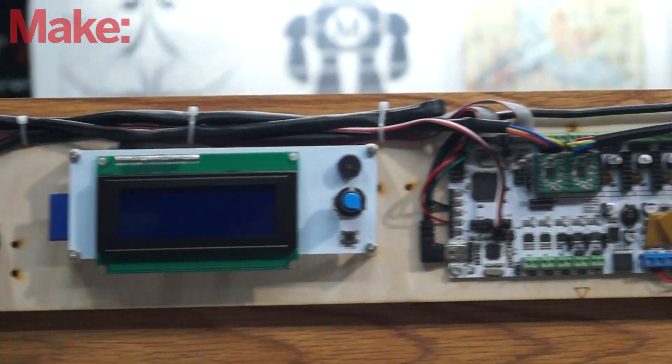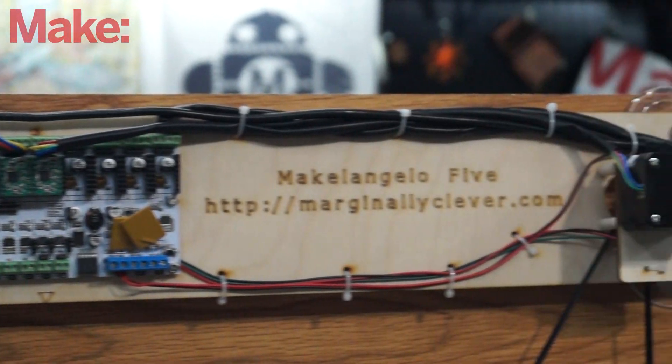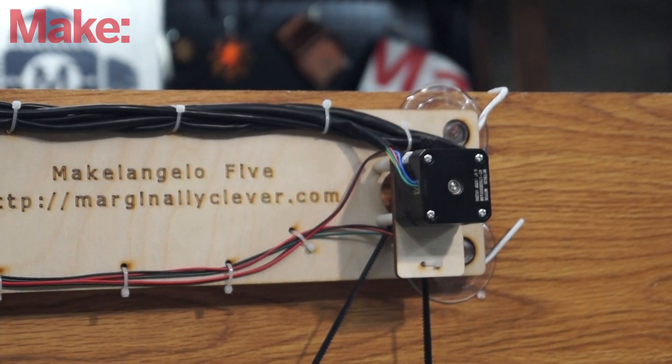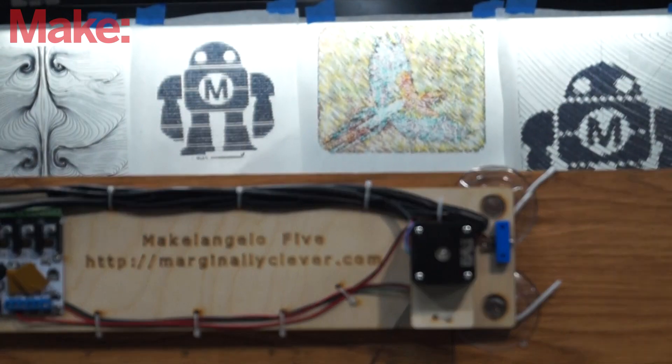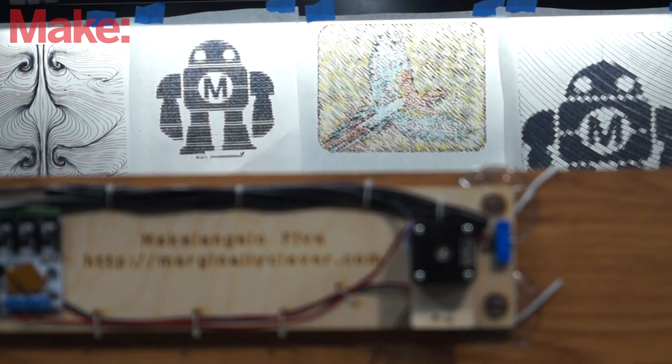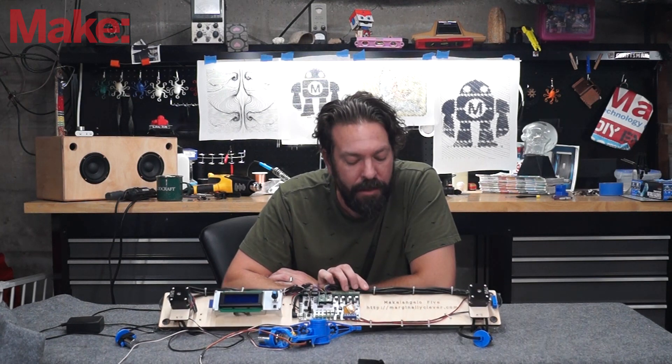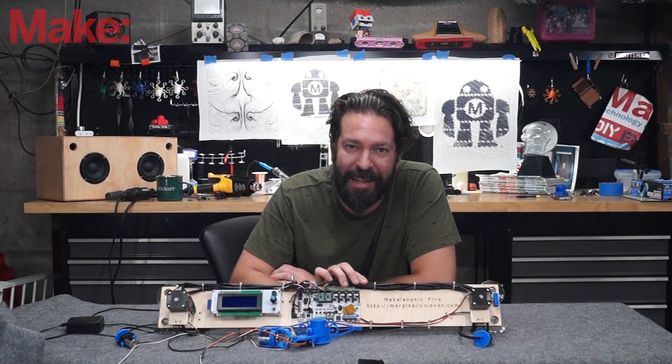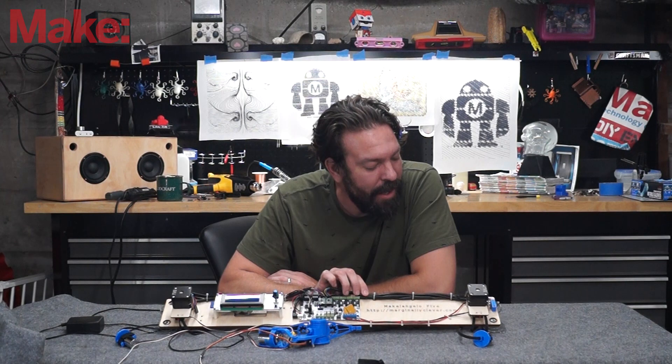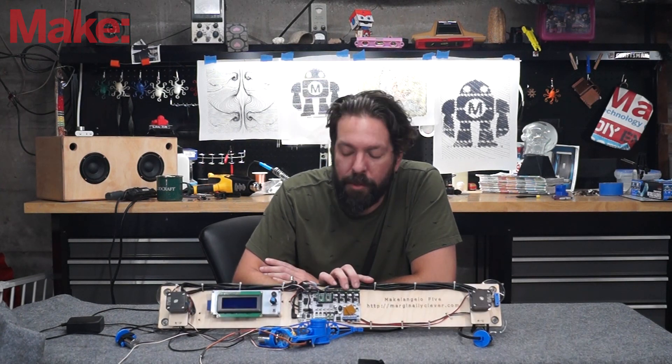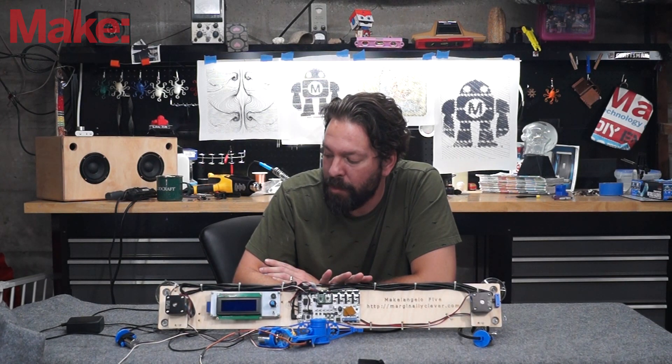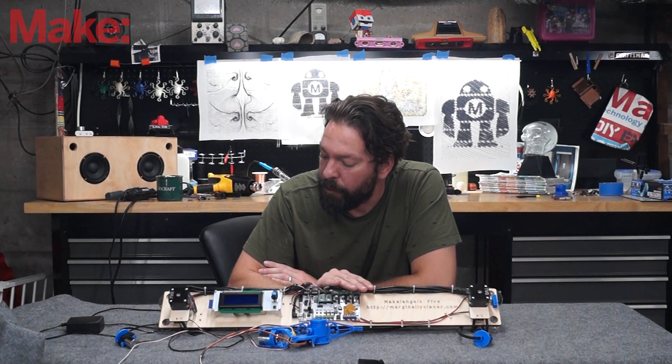This is the Michelangelo 5 from Marginally Clever Robotics. It's just under $400 Canadian for the complete kit. It comes with everything you need to start drawing except paper, although you could just draw directly on the glass with what it comes with. You can find more information about this robot and the other robots they make at marginallyclever.com.